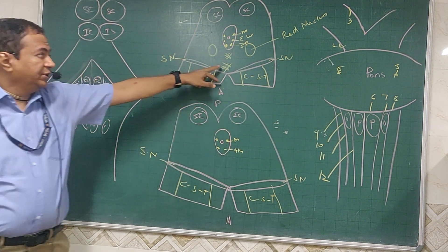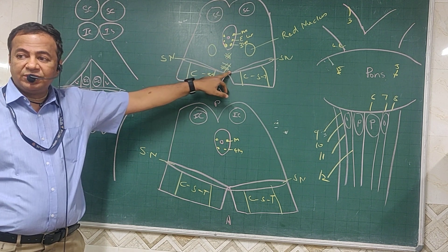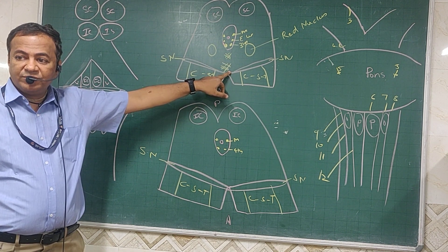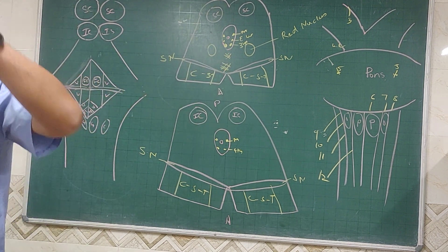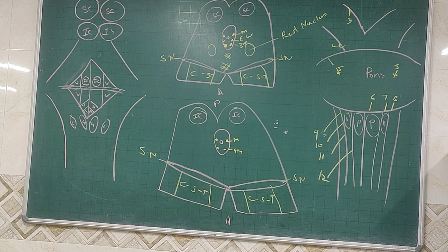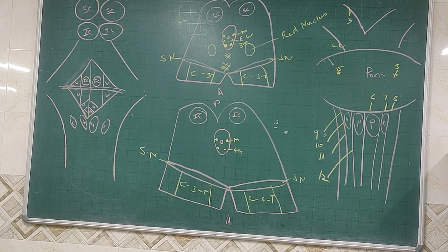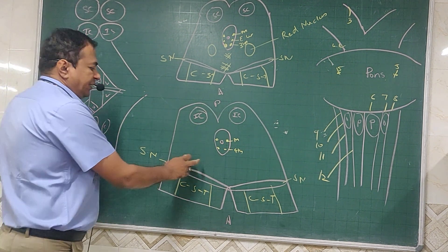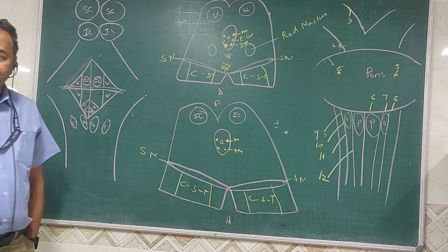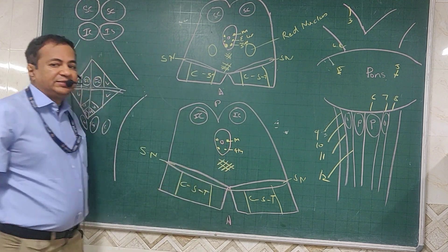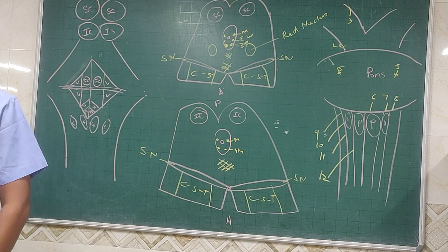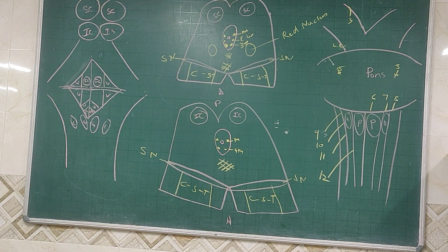These two tracts cross over at the level of superior colliculus: decussation of the rubrospinal tract and decussation of the tectospinal tract. At the level of inferior colliculus there is no red nucleus, but there is one decussation — the decussation of the superior cerebellar peduncle.